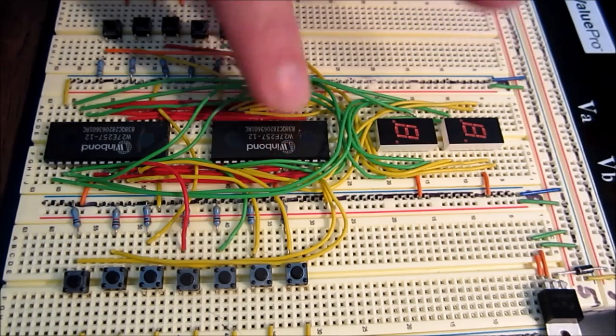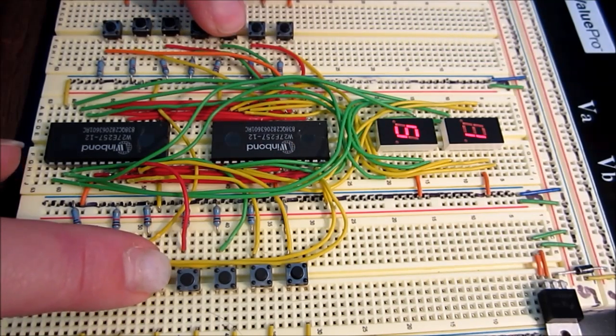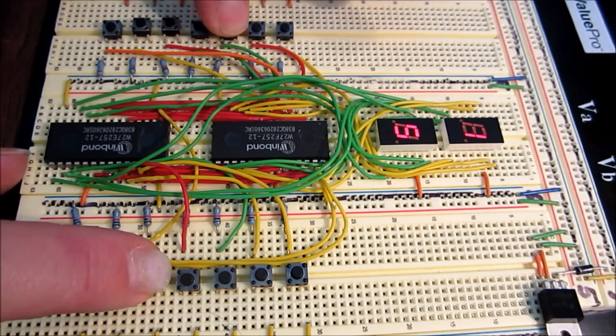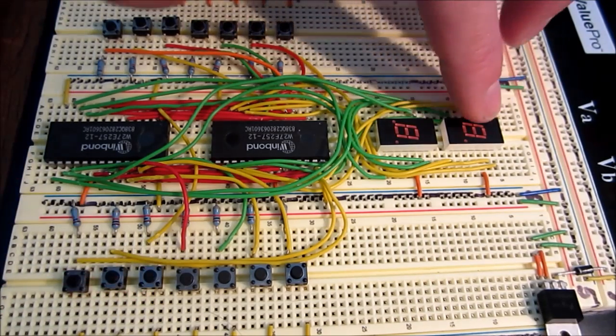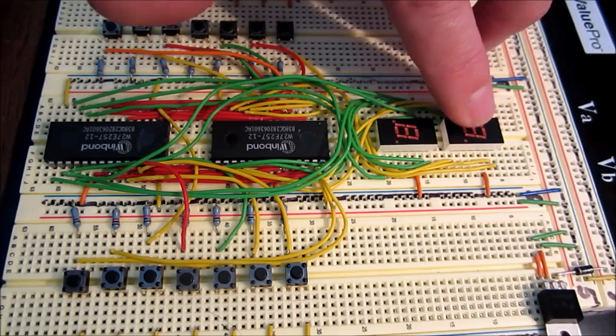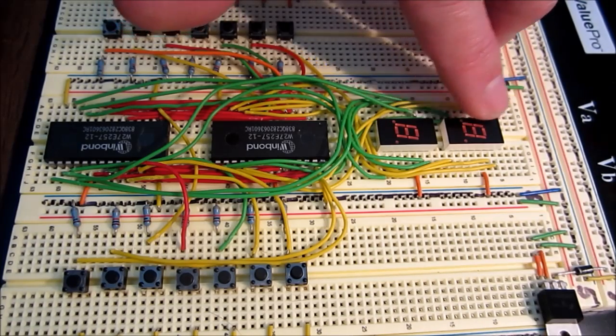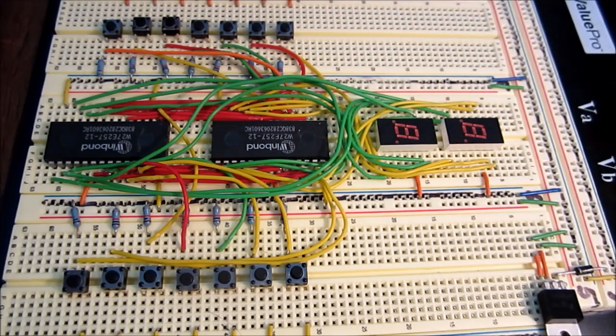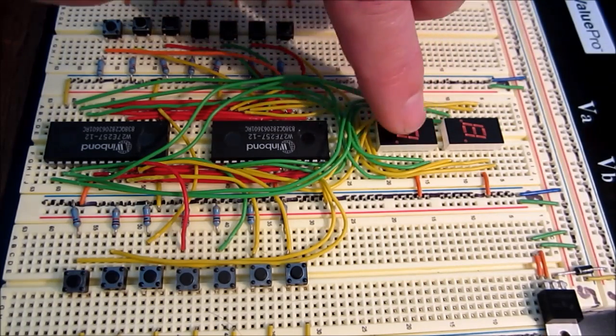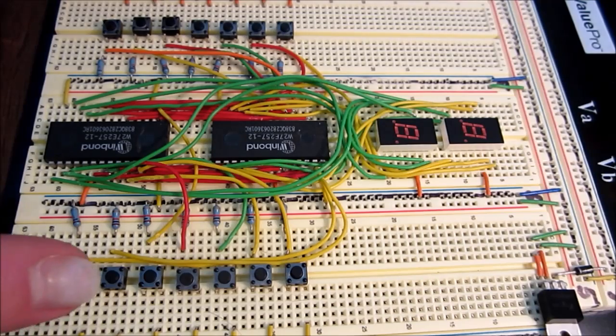But what that data is is not the number. So for instance if I output a 15, it doesn't know what a 1 and a 5 is. All it's doing is outputting the data that will drive this seven segment display for the elements that makes a 1, and likewise down here the segments that will form a 5.